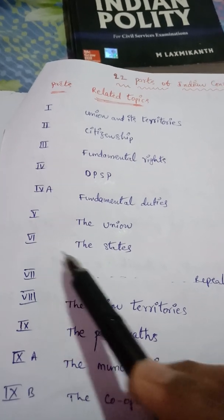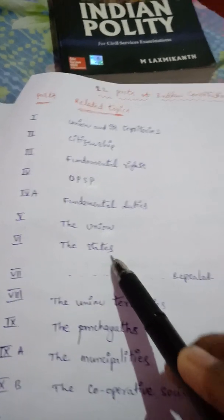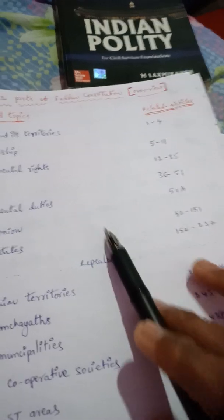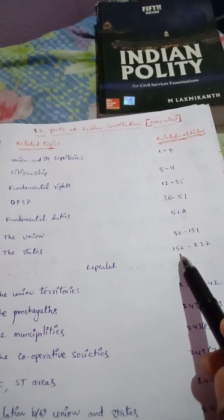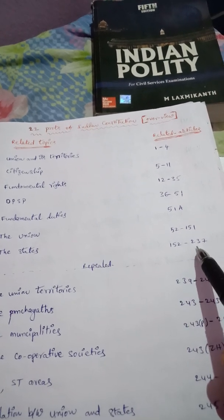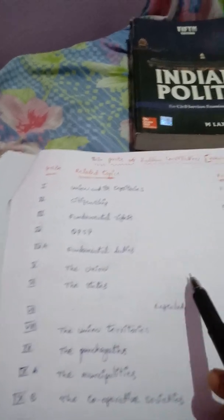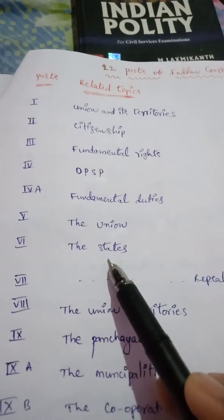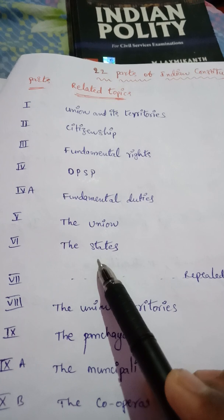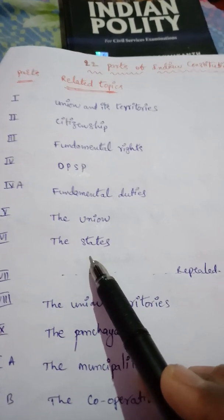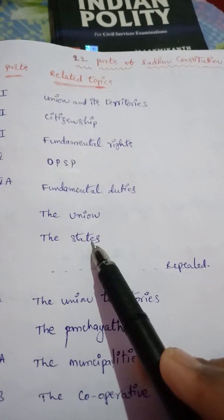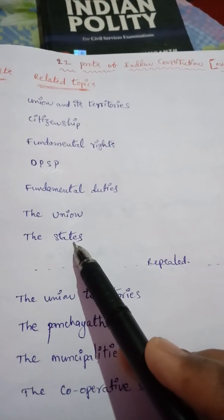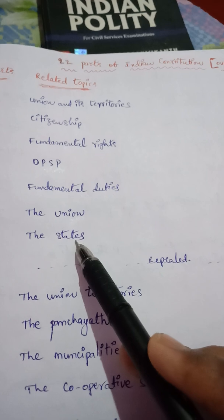Part Six tells about the states — the articles relating to states run from Article 150 to 237. The definition of states — for example, states does not include Jammu and Kashmir, because Jammu and Kashmir has a separate flag as well as a separate constitution.